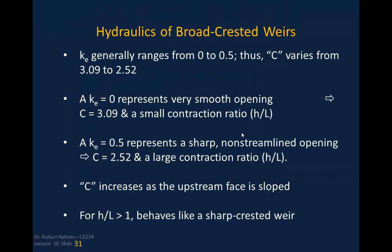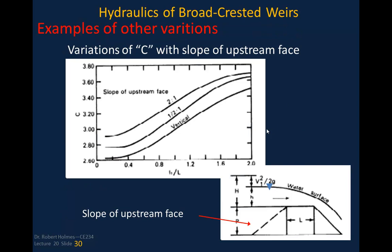There's an extra handout on Blackboard going through the USGS development in more detail, including graphs for corrections based on weir geometry. The goal here is to give you vocabulary and understanding of how weir equations are derived, and to recognize that the coefficient of discharge C must be adjusted based on what kind of weir you're working with.